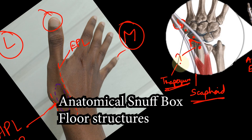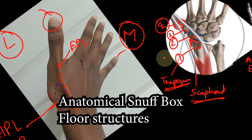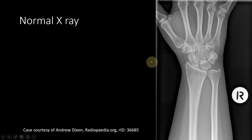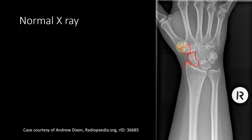The floor structures of the anatomical snuffbox are the radial styloid, scaphoid, trapezium, and the base of the first metacarpal. These floor structures can be seen on an X-ray of the wrist. You can see the radial styloid here, the scaphoid — which has a boat shape, hence the name scaphoid — the trapezium, and the base of the first metacarpal forming the floor of the anatomical snuffbox.